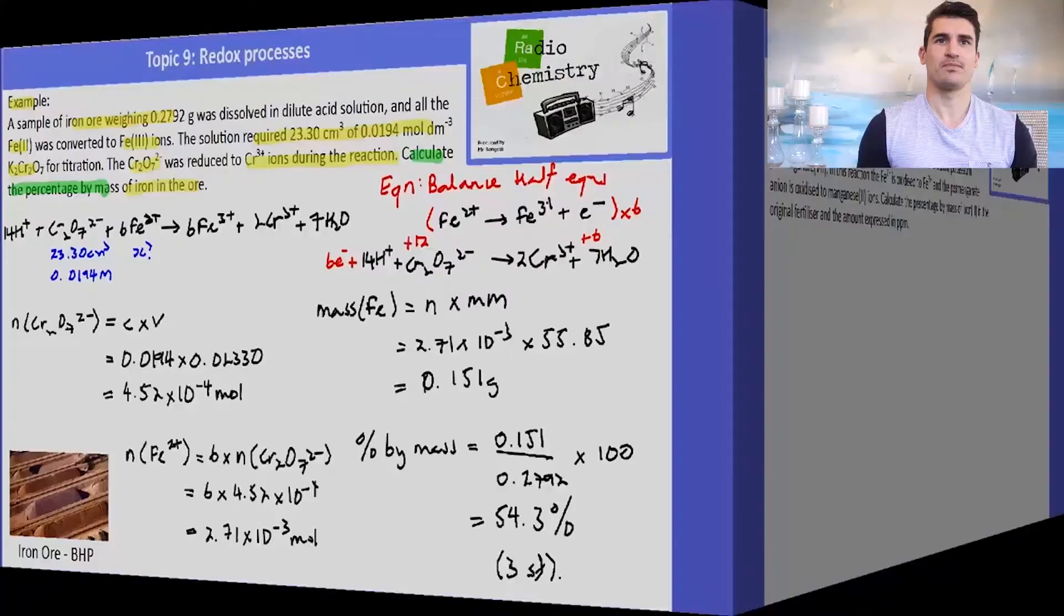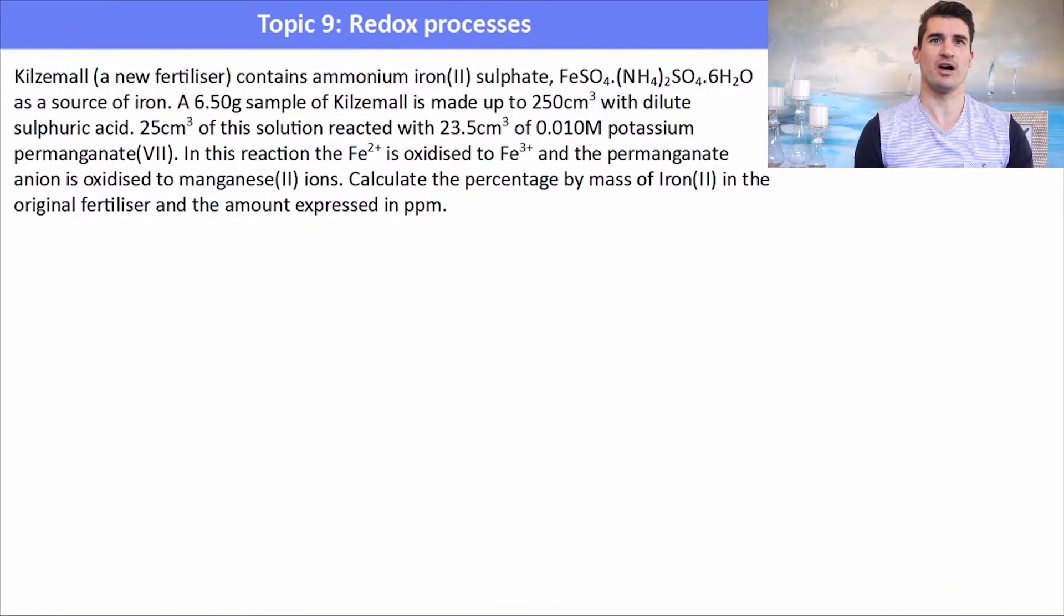Okay, the second example. Kiserite contains ammonium iron sulfate as a source of iron. 6.5 grams of Kiserite is made up to 250 centimeters cubed with dilute sulfuric acid.